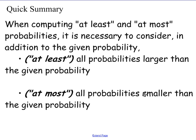When it says at most, you have to consider the given probability and all probabilities smaller than the given probability. So in example 2, we had to consider when r equals 2. And then we had to consider all the probabilities less than that. And that was when r equals 1.